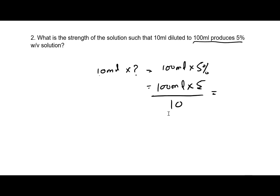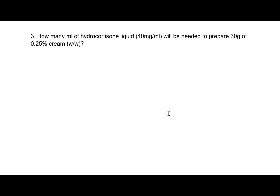The answer is 50%. Next question: how many milliliters of hydrocortisone liquid will be needed to prepare 30 grams of 0.25% cream? This is a slightly different question. I have a liquid with a concentration of 40 mg per ml, and I need to make a hydrocortisone cream from it at that specified strength.